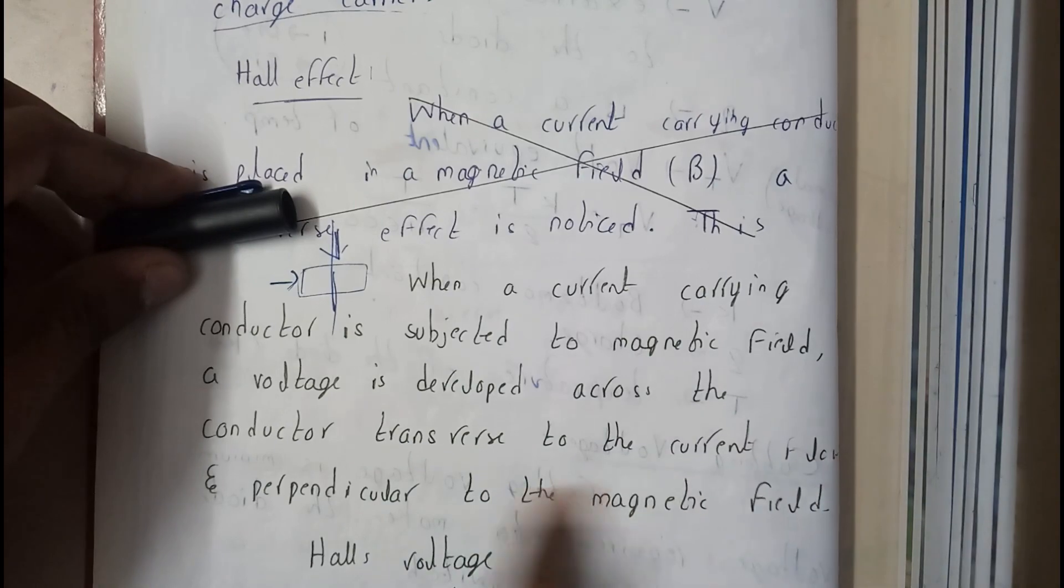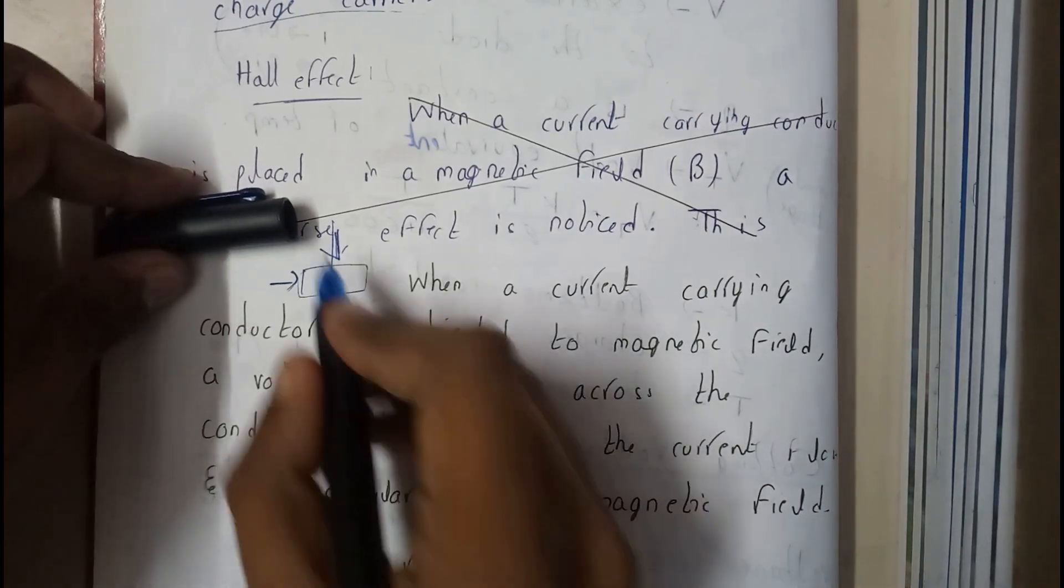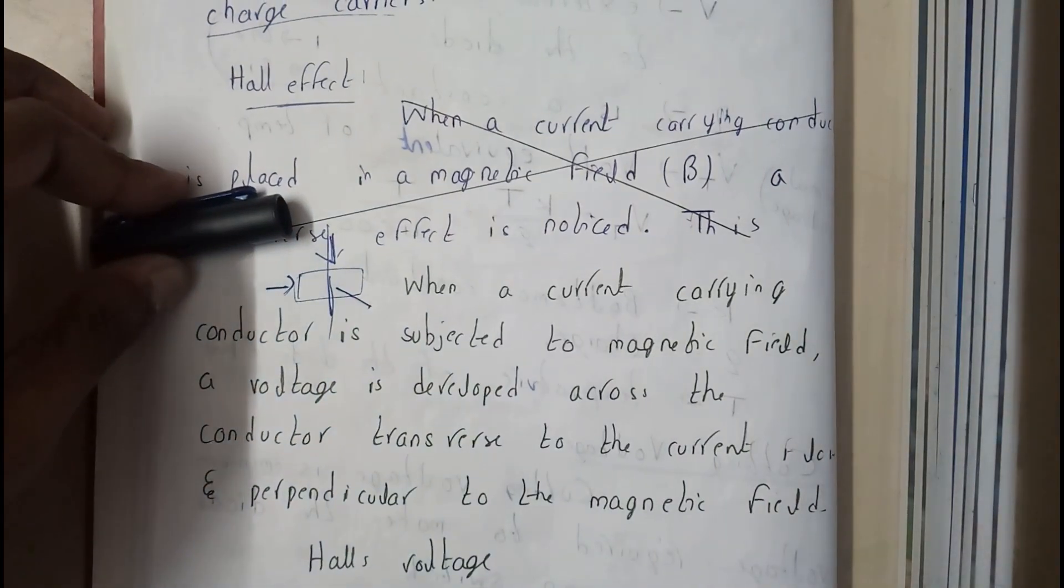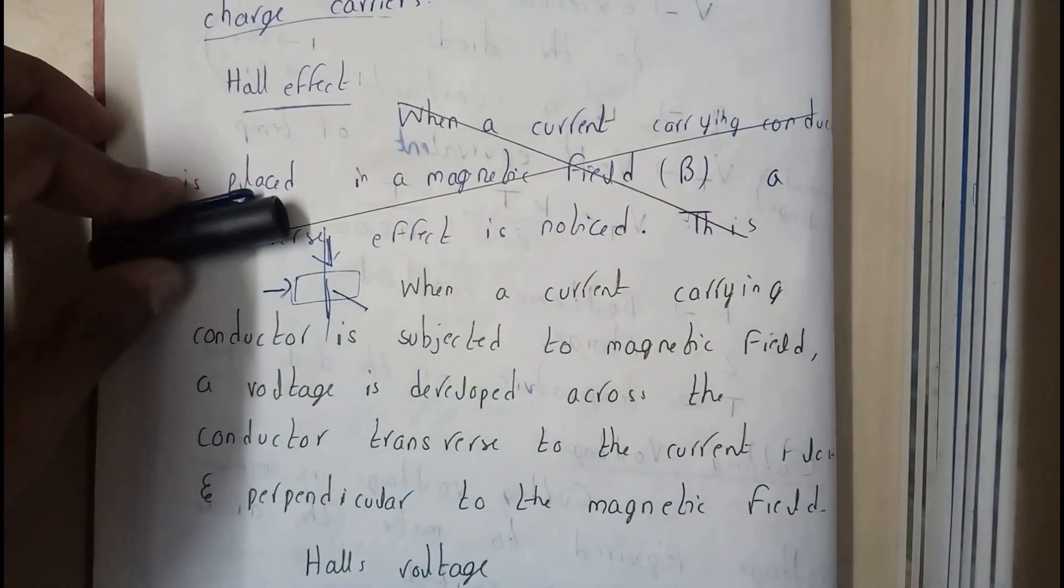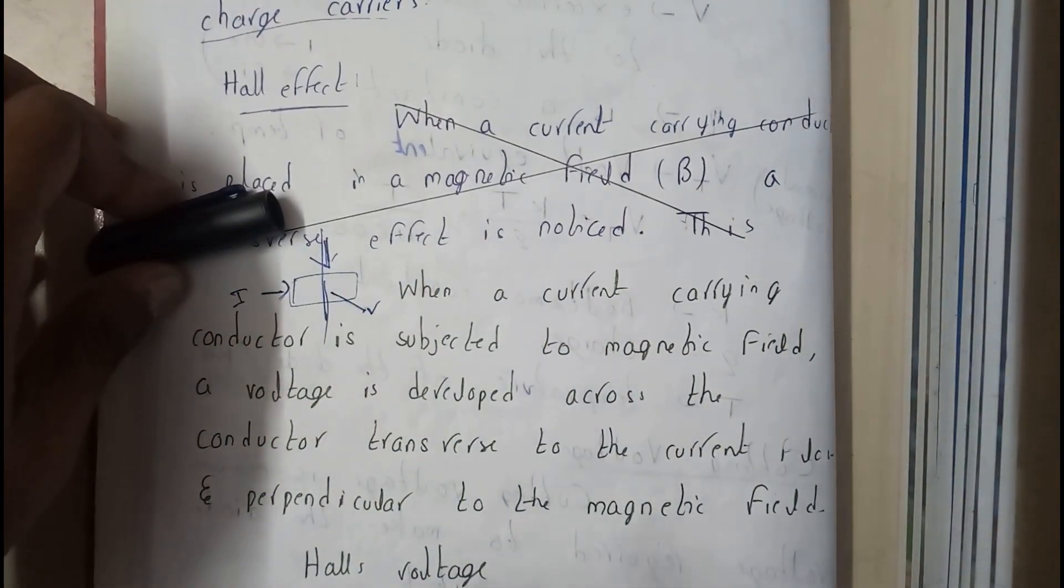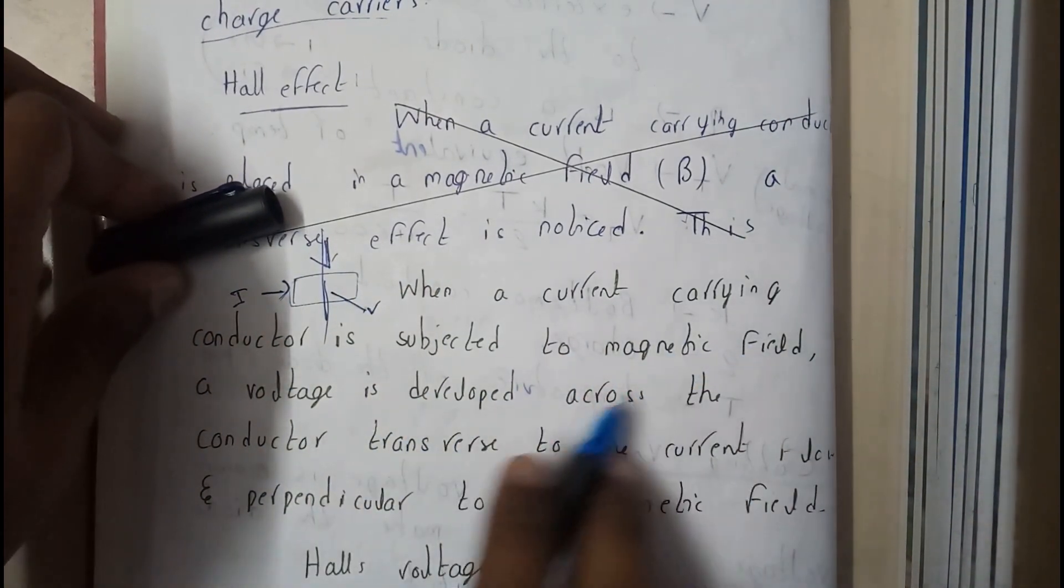Transverse to the current flow and perpendicular to the magnetic field, for these two it will be perpendicular. Hence these three are perpendicular: the voltage, current, and the magnetic field. These three are going to be perpendicular.